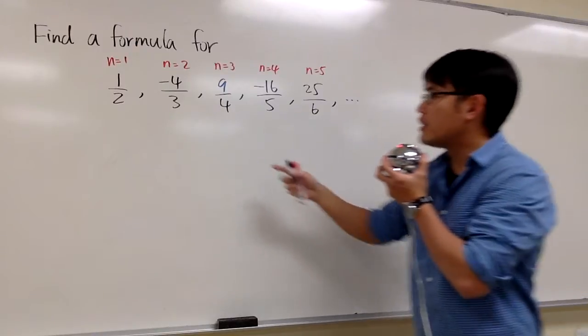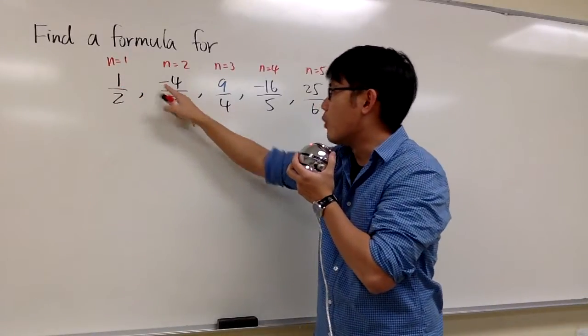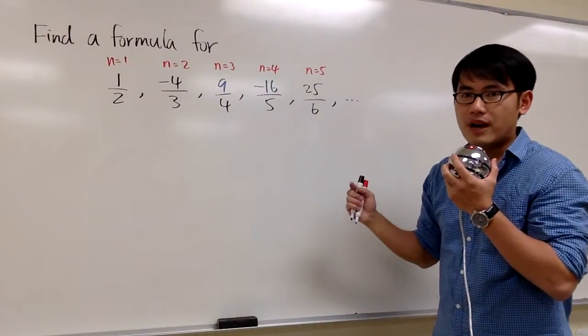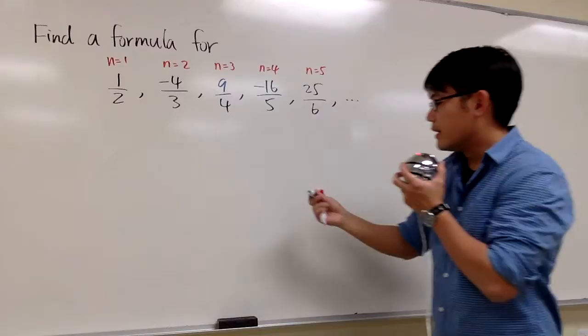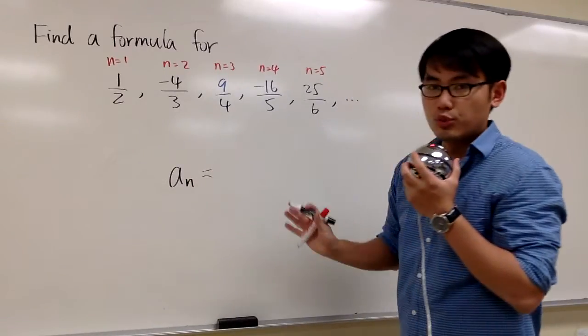However, the sign alternates. We start with positive 1, then negative 4, then positive 9, then negative 16, then positive 25. So this is a strategy. Now let me write down the formula for the numerator.